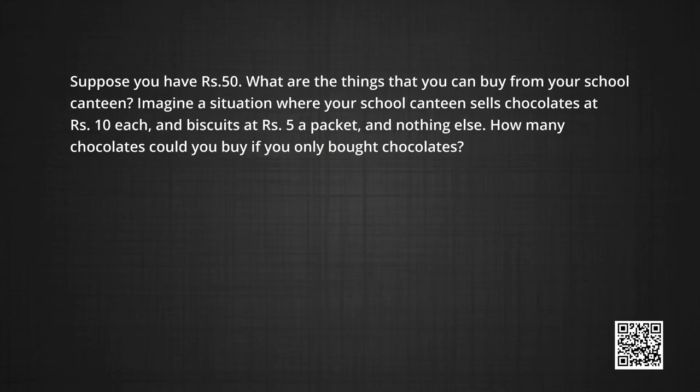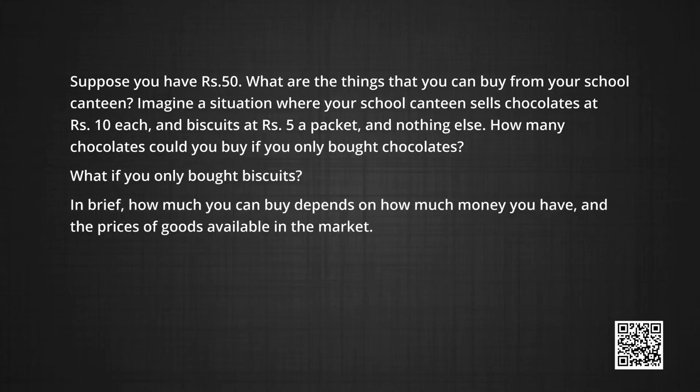Suppose you have rupees 50. What are the things that you can buy from your school canteen? Imagine a situation where your school canteen sells chocolates at rupees 10 each and biscuits at rupees 5 a packet and nothing else. How many chocolates could you buy if you only bought chocolates? You could buy at most five chocolates. If you bought only biscuits, you would at most buy 10 packets. How much you can buy depends on how much money you have and the prices of goods available in the market.